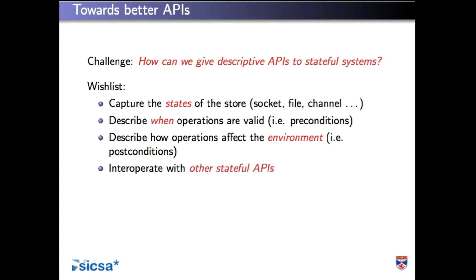We want to interoperate with other stateful APIs, meaning we want lots of these things at once. Any realistic system is managing multiple resources and multiple state machine systems at the same time, and they might be implemented in terms of each other. It's like a whole hierarchy of state machines — state machines all the way down.